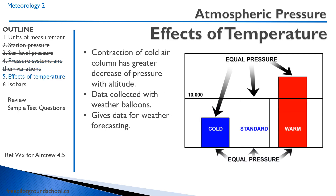Temperature can affect atmospheric pressure. The contraction of a cold air column causes a greater decrease of pressure with altitude because it's more dense — everything sits lower. Conversely, warm air will have a greater change of pressure with altitude. These data are collected using weather balloons and are very important for weather forecasting.